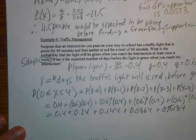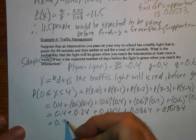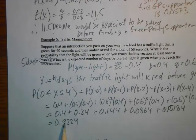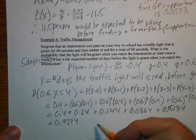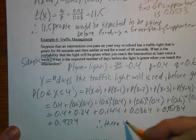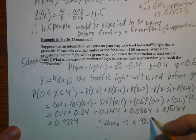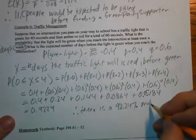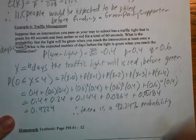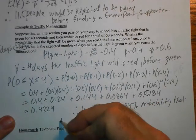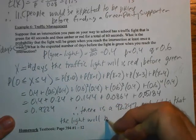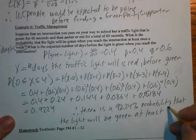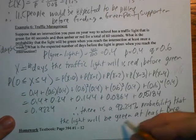Adding all those up gives 0.9224. Therefore, there is a 92.24% probability that the light will be green at least once during the school week.